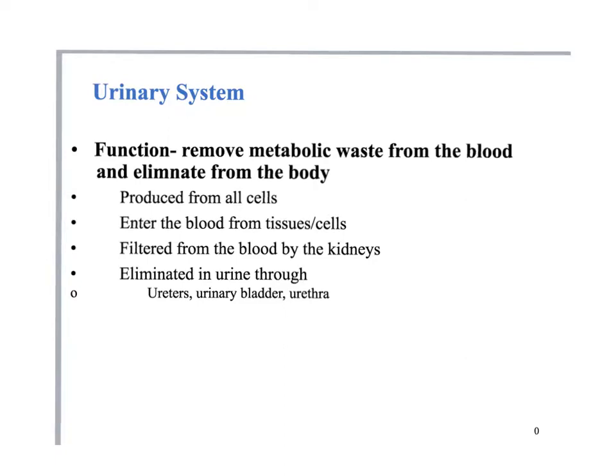We're going to start on the urinary system. We're going to go kind of quick because this part at the beginning is pretty easy. The overall function of the urinary system is to remove nitrogenous waste from the blood and eliminate it from the body. It filters the blood of any broken down metabolic waste products. Metabolic waste is produced from all cells of the body, gets to the blood, then goes to the kidney and is removed. It's eliminated in the form of urine.